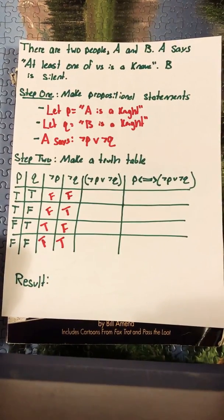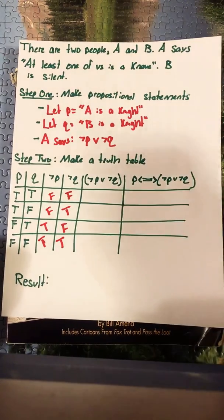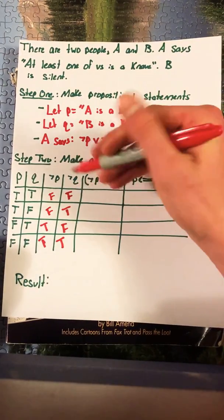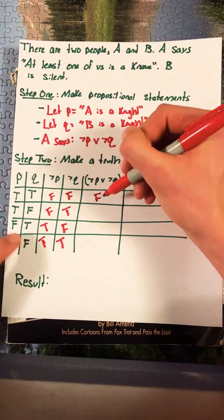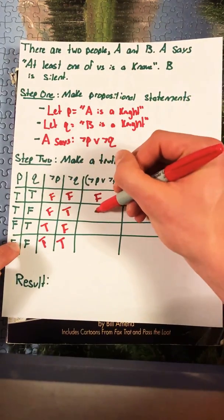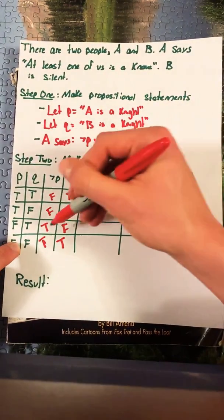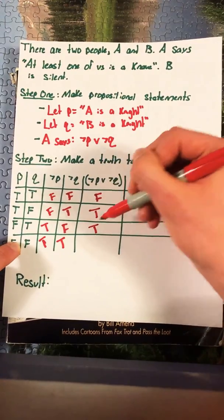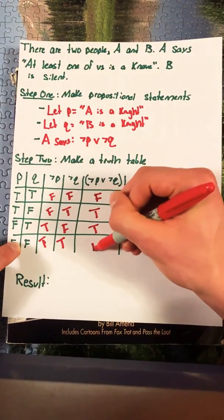Now we look at not P or not Q. For or we remember that only one has to be true in order for the entire statement to be true. Here we have false and false so that's going to give us false. Now we have false and true. That will give us true. True and false will give us true and true and true will give us true.